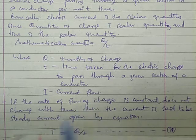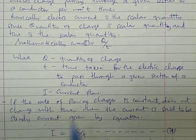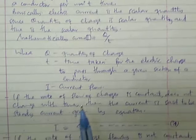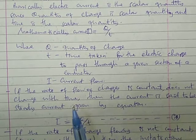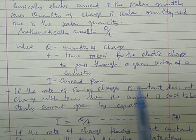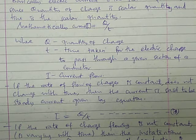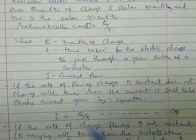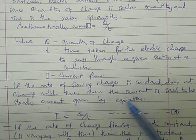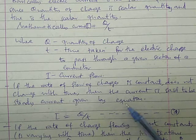If the rate of flow of charge is constant, that means there is no change in the amount of electrons passing through the conductor with time, then the current is said to be steady current, given by the equation I equals Q over T. We can call this equation 1.